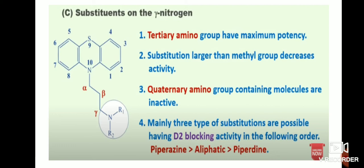For substitutions on the gamma nitrogen at the terminal end: the tertiary amino group has maximum potency — if a tertiary amino group is present, it shows maximum antipsychotic potency. Substitutions larger than a methyl group decrease the activity. Primary amino group-containing molecules are inactive.